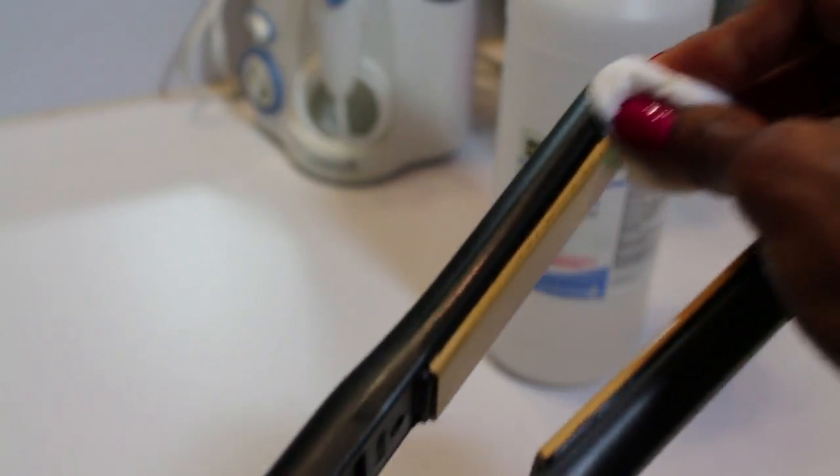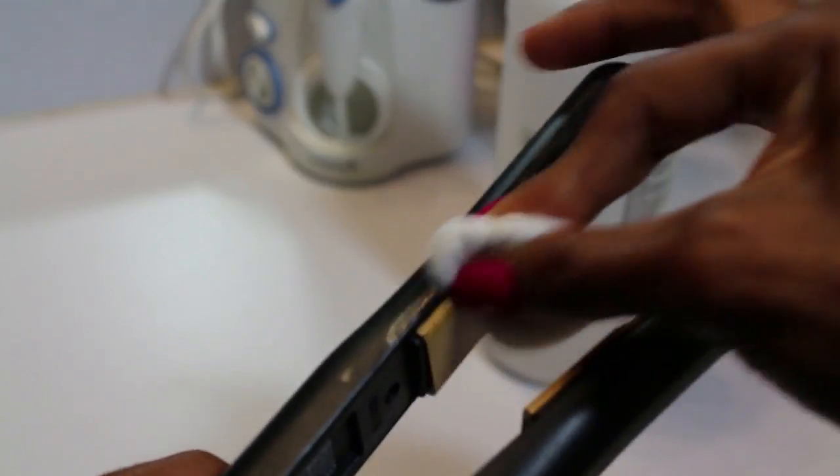You can see here that I'm continuing to clean. I did need a little more elbow grease for the other plate. I'm not scrubbing with my nail—it kind of looks like I am there, but there's still cotton underneath where my nail is. I just needed some extra pressure to get some of that stuff off.